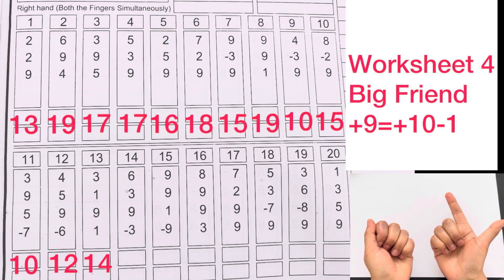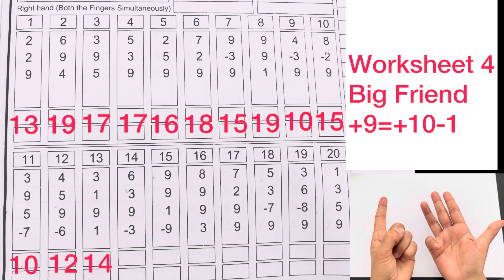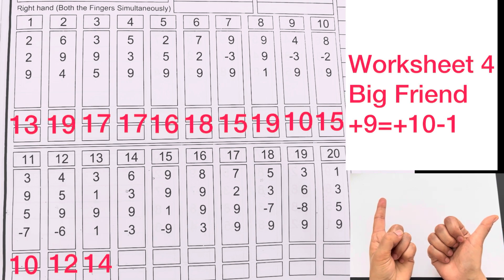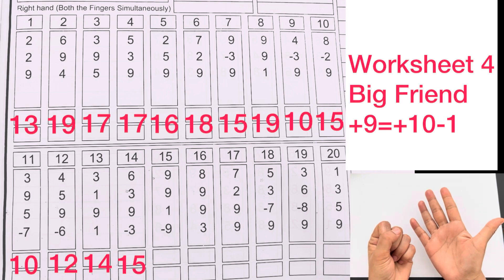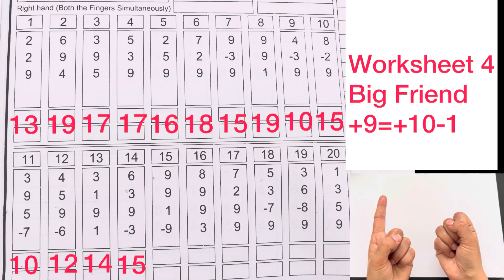6 plus 9 plus 9, plus 10 minus 1, minus 3. Answer is 15. 7 plus 9 plus 9 plus 9 plus 9, plus 10 minus 1. Answer is 15.